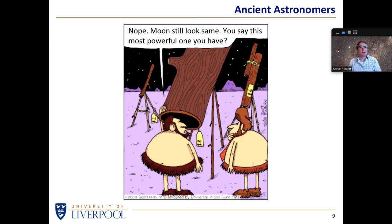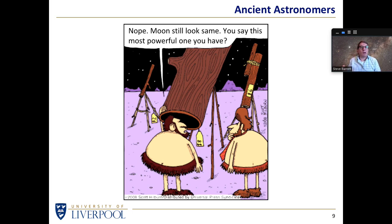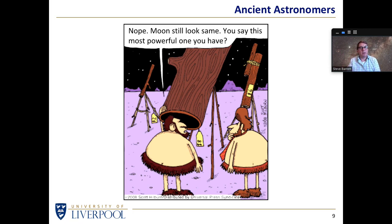Let's have a look at a few cartoons from a long time ago. A couple of cavemen, one apparently selling telescopes to another. 'No, moon still looks the same. You say this is the most powerful one you have?' A lot of hollow logs are on sale here and the caveman is obviously very disappointed that looking through these hollow logs, they apparently all have a magnification of times one. Strapped to the side of one is a smaller hollow log - a little finder log - to make it easier to line up with your times-one magnification on a distant object.